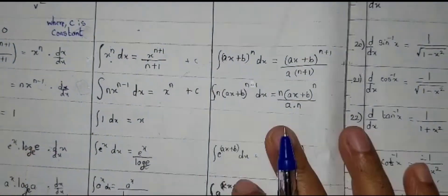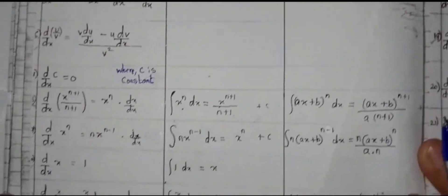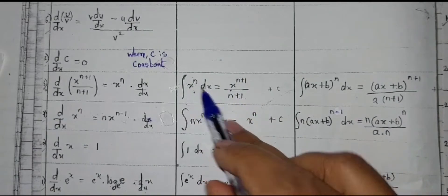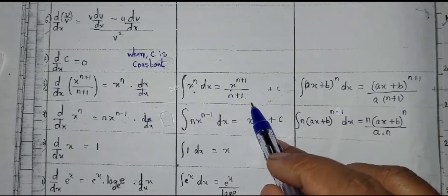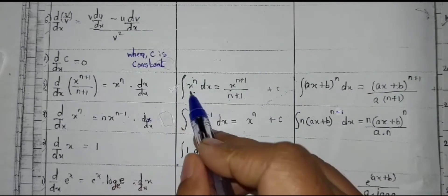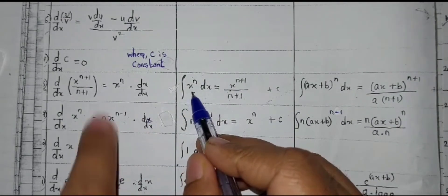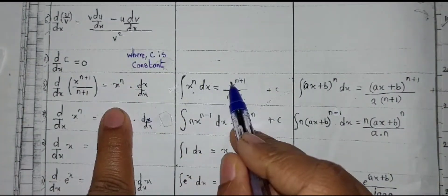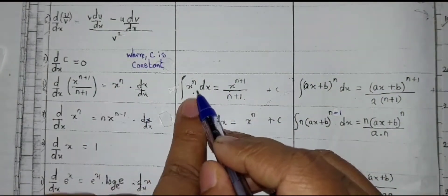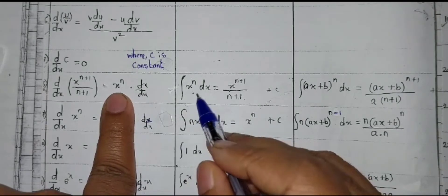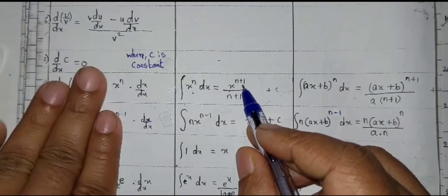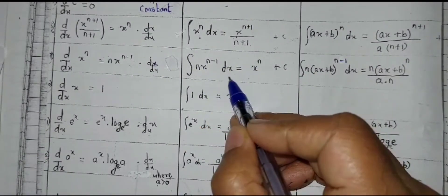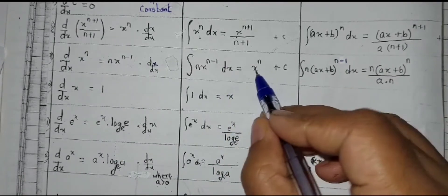Now let us understand some integration formulas in the standard function column. Integration of x raised to n dx is equal to x raised to n plus 1 upon n plus 1 plus constant of integration. The question of integration is the answer of derivation. If you remember the derivation formulas, you can easily and indirectly find the answer of the integration part. Similarly, integration of n times x raised to n minus 1 dx is equal to x raised to n plus c.